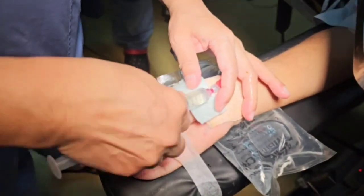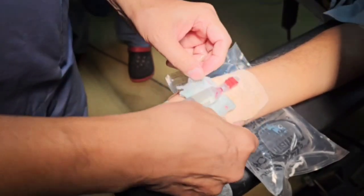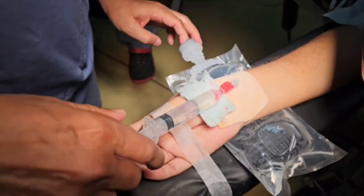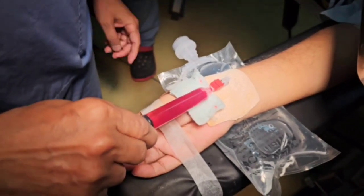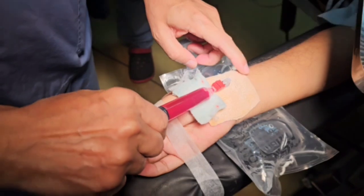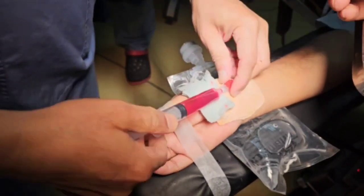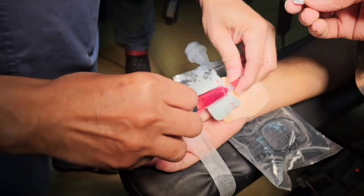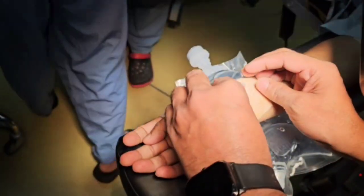It's important to regularly flush the arterial line with heparinized solution. As we know, arterial blood is more sticky and it can cause overdamping of the arterial waveform in the monitor by forming micro blood clots. And that's all for today.